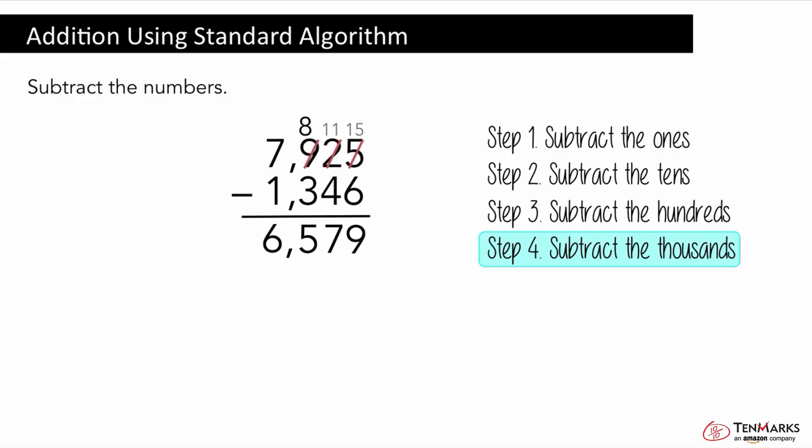Seven thousand nine hundred twenty five minus one thousand three hundred forty six is equal to six thousand five hundred seventy nine. In this lesson you've learned to subtract using the standard algorithm. Thanks for watching.